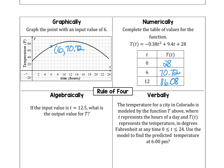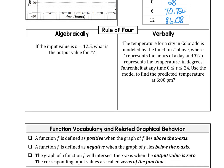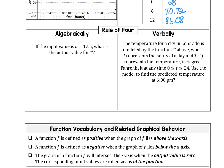In the algebraic column, if the input value is t = 12.5, what is the output value? Representing that, we want to evaluate T of 12.5 and find that the answer using our calculator is 86.125.